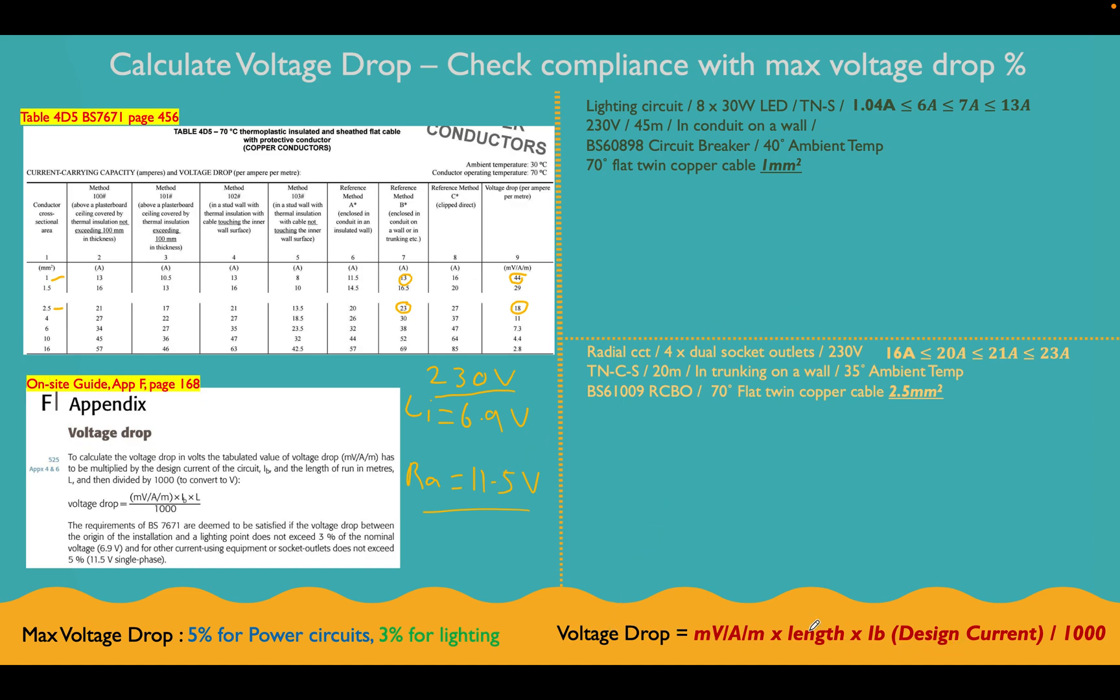So here's our formula, again, down here that we're going to go for. And then now, let's work our way through this. Let's go for it on this side. Let's do the lighting circuit first. So following our formula, let's find our little bits. So millivolt amps per meter for this circuit is going to be 44. Let's put that there, and we've got the length, which is equal to 45 meters. And then our design current for this circuit was 1.04 amps.